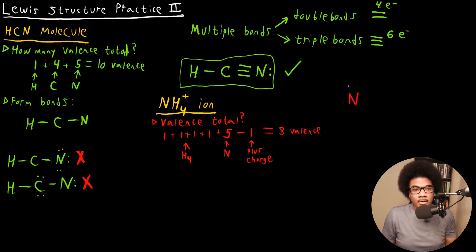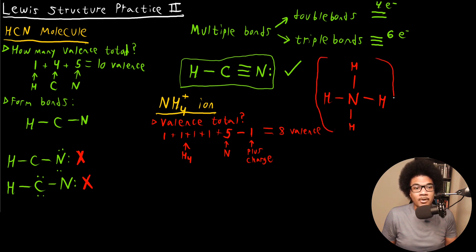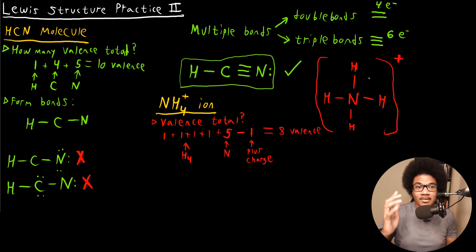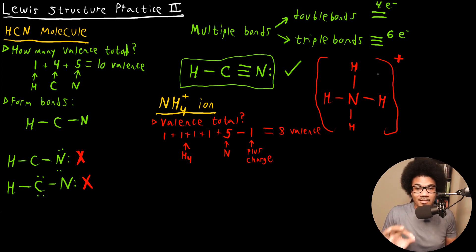The Lewis structure for NH4+ is straightforward: nitrogen in the center bonded to the four hydrogens so that they're all satisfied. To denote the charge, we put the molecule in parentheses and place the charge on the outside. This makes it unambiguous that the entire molecule has a plus one charge — everything in parentheses has a total charge of plus one.